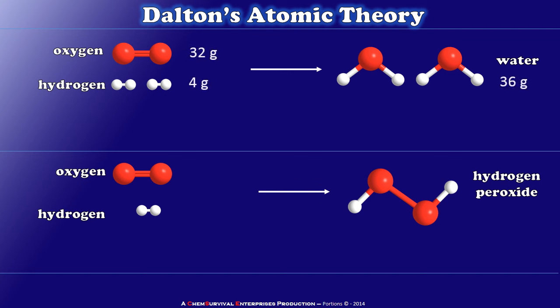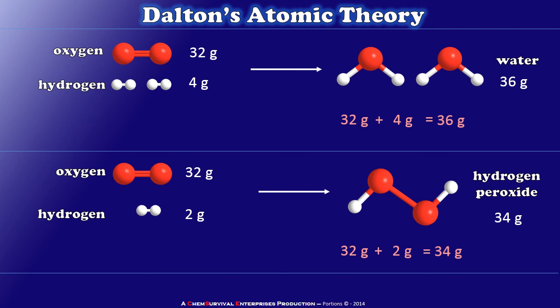Let's take a look at how he did it. Looking at the top reaction, let's say that I start with 32 grams of oxygen. I'll need 4 grams of hydrogen to completely convert that oxygen into water, and when I measure the amount of water formed I get exactly 36 grams. The sum of the masses of all the starting materials is equal to the mass of the products, and this holds for any chemical reaction. In the bottom reaction, 32 grams of oxygen reacts with 2 grams of hydrogen to form 34 grams of hydrogen peroxide. We call this the law of conservation of mass — in any chemical process the total mass of all starting materials is equal to the total mass of all products.